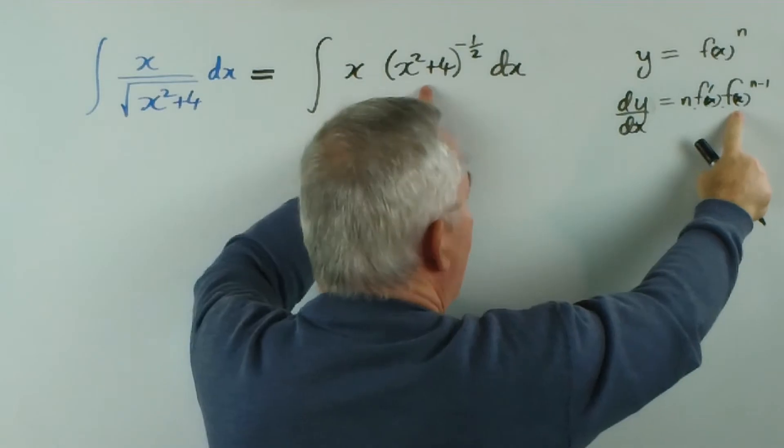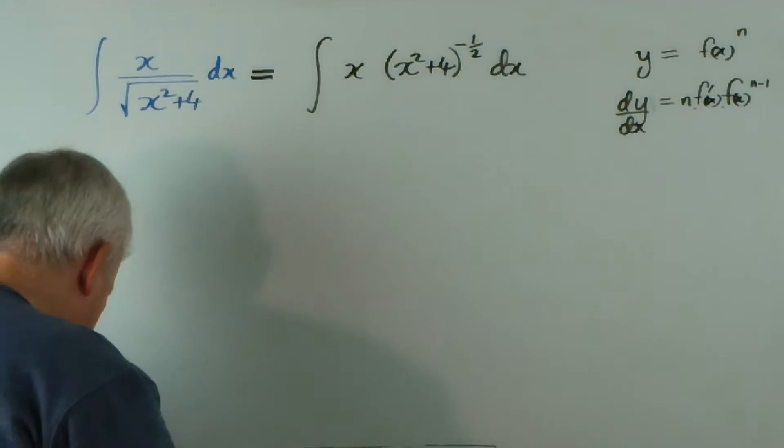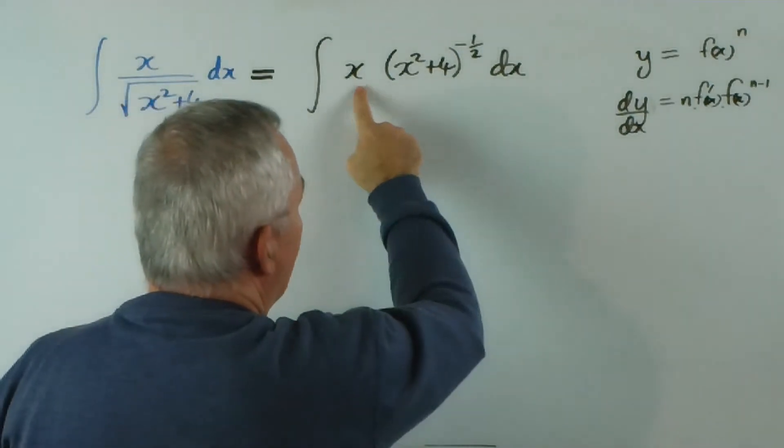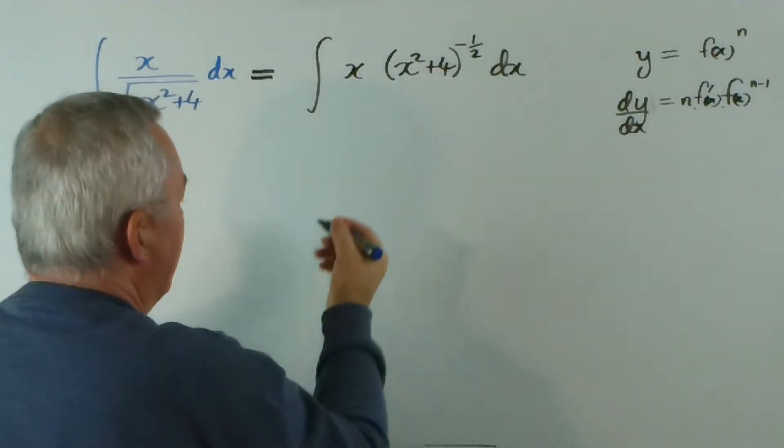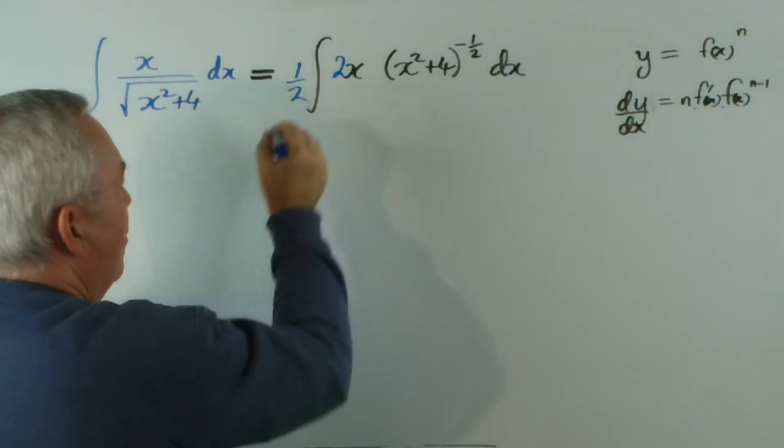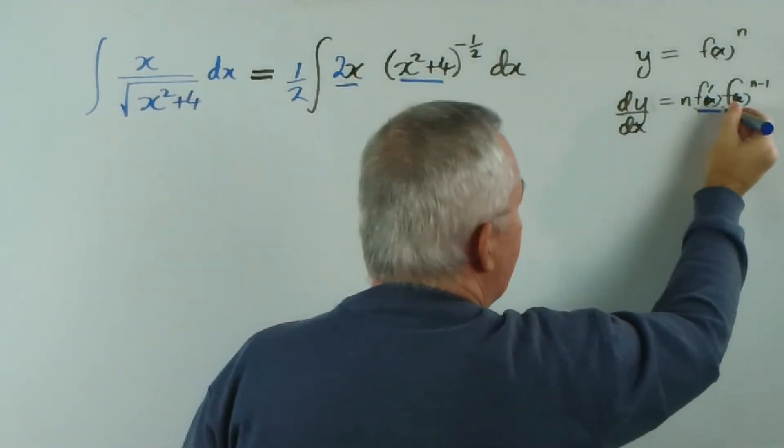We have a function to a power, we have its integral out the front, so let's match this. Now I'm going to use color to make the adjustments. Our derivative would like to be 2x, so let's make that adjustment. Write in a 2, compensate with a half out the front. Now that is the derivative of that, so we've matched this.